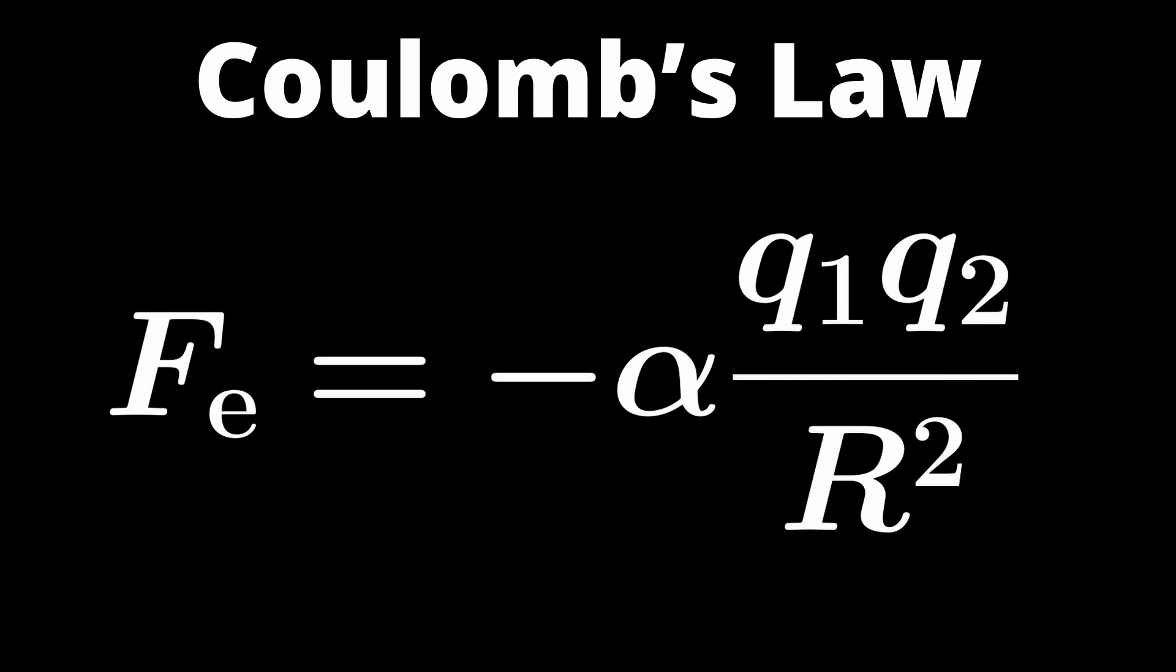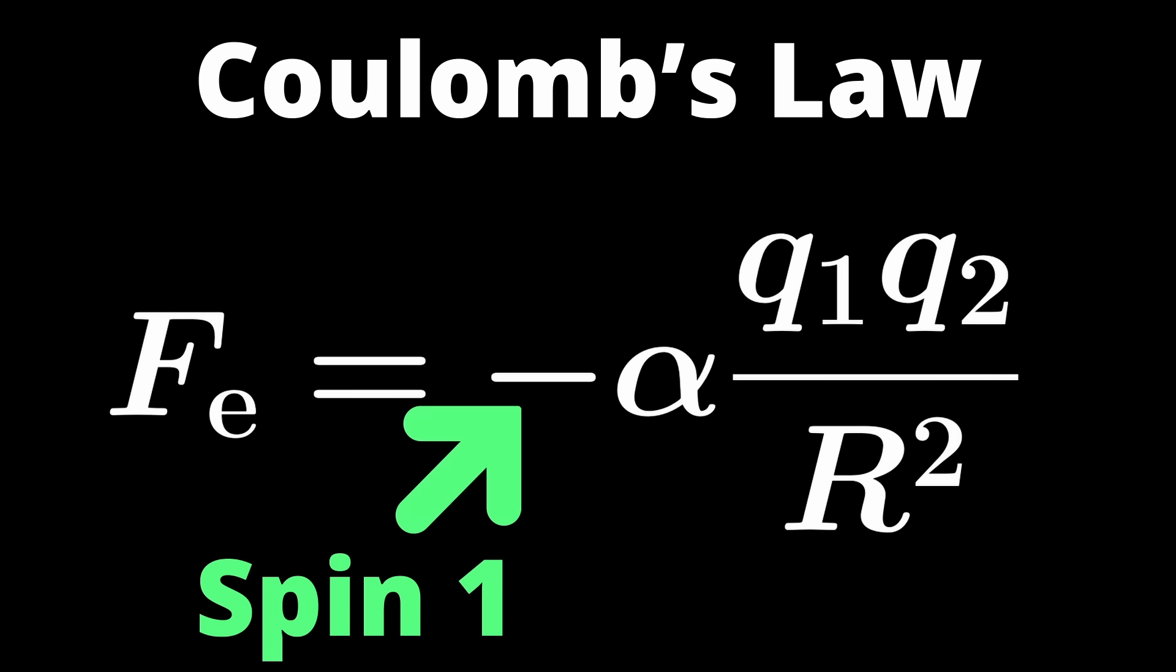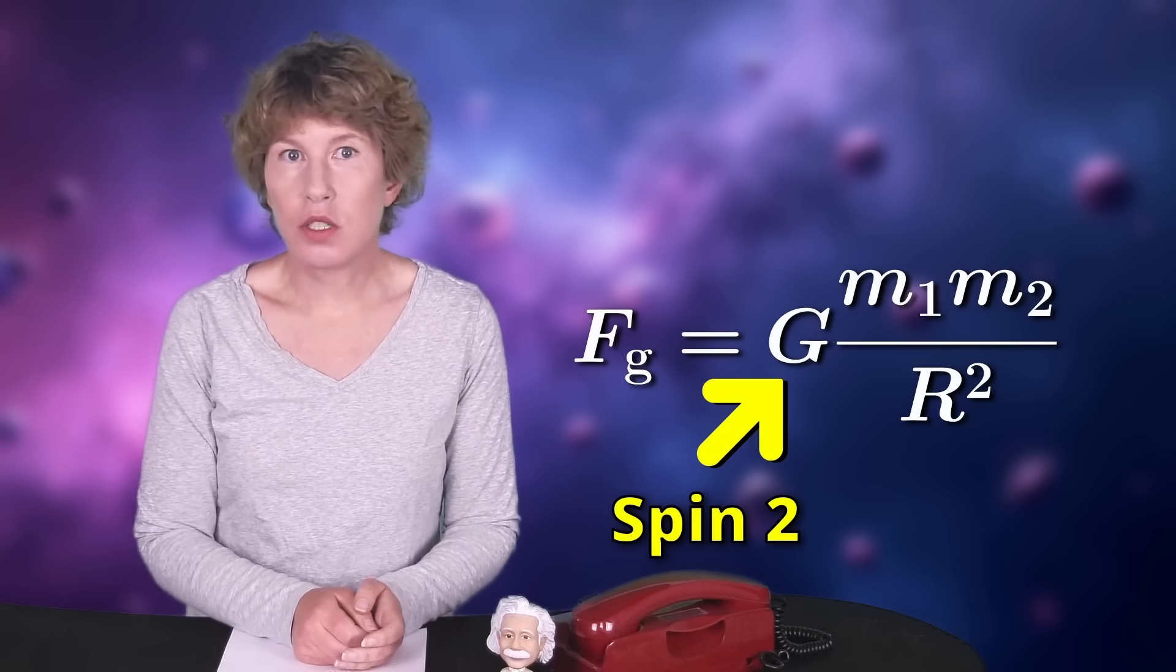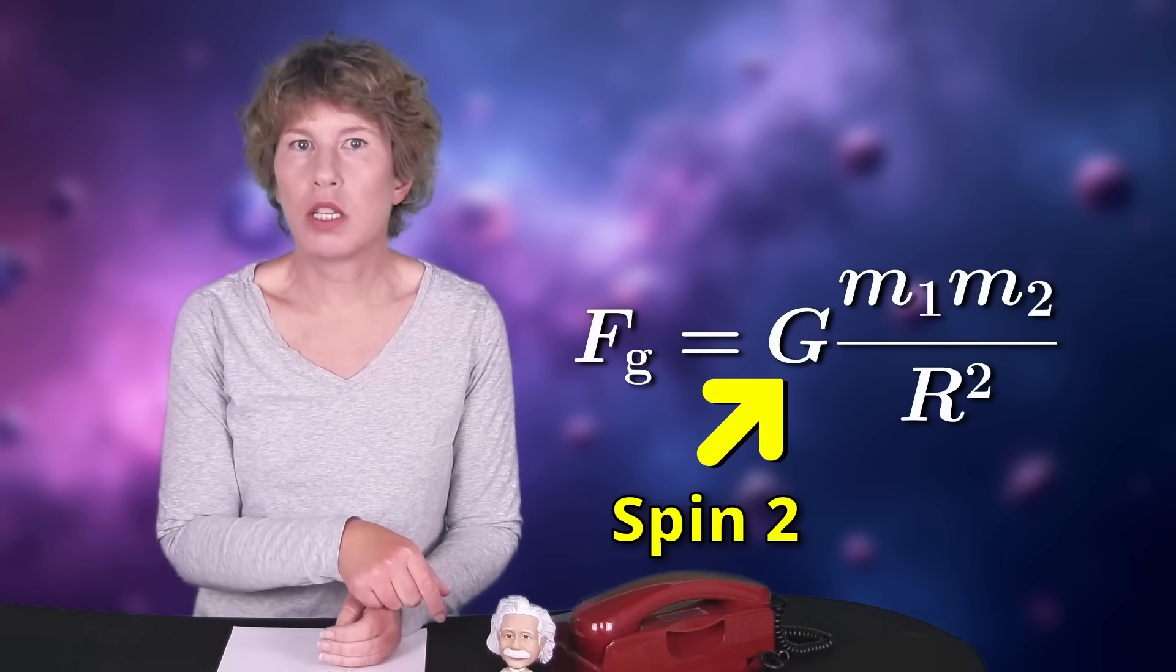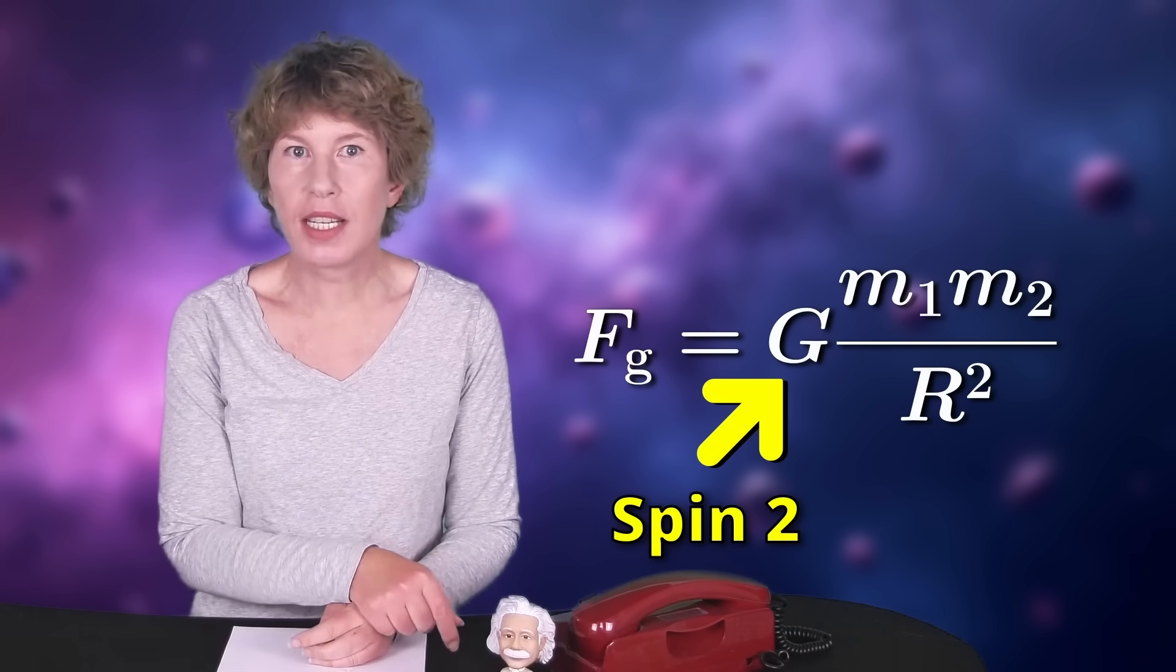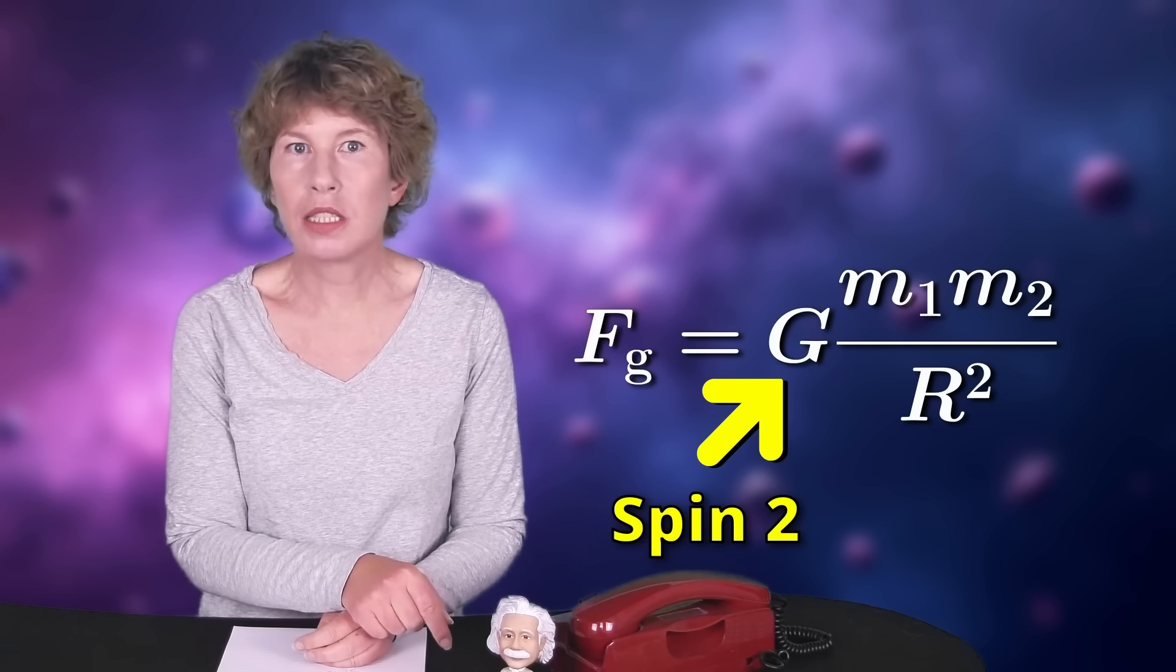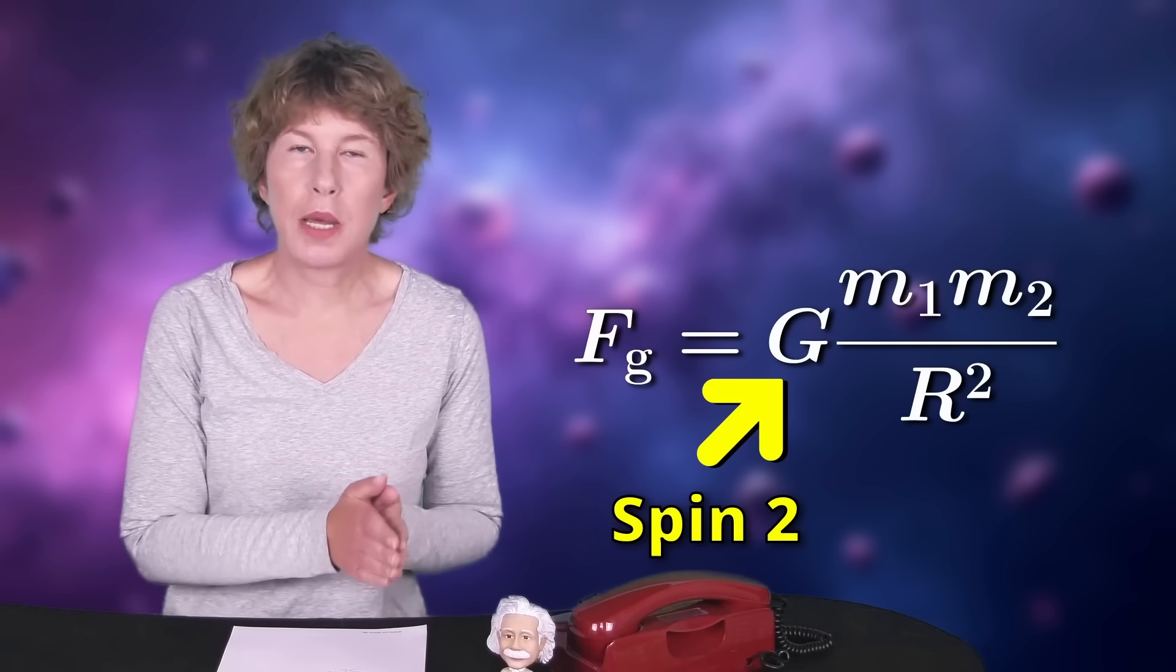You see, for electric charges, the carrier's the photon that has spin 1. It follows from this that unlike charges attract, like charges repel. For gravity, the carrier force has spin 2, and it's the other way round. Like charges attract, unlike charges repel, where the charge is now the mass. You find that calculation in the Feynman lectures. Why have we never observed anti-gravitating mass? Good topic for your PhD thesis, maybe.